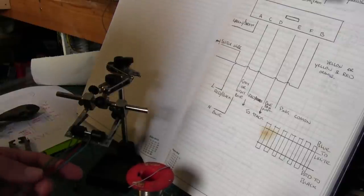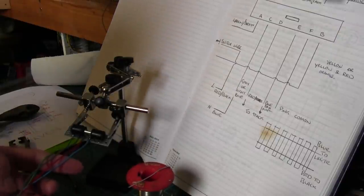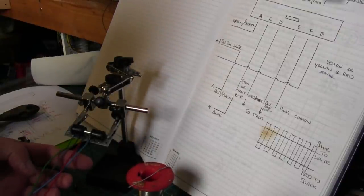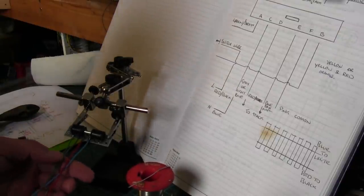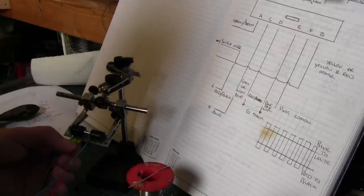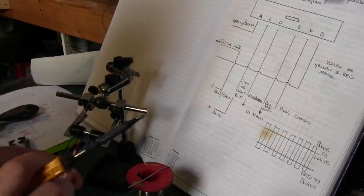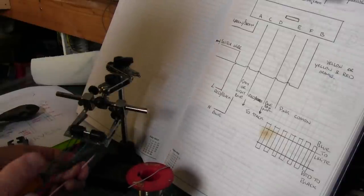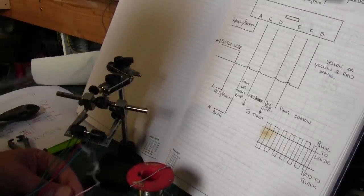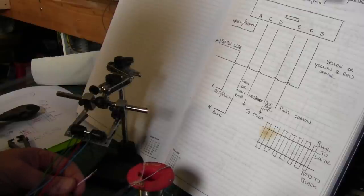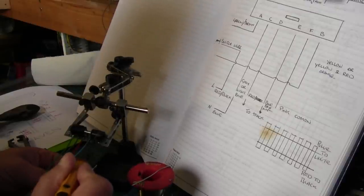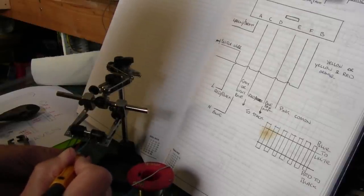I prefer to have different color cables so I know exactly where they're going when I fit the point motor to the baseboard. I'm just putting in the pink common now. The pink common actually goes to the frog on the point.